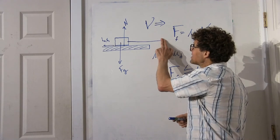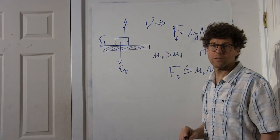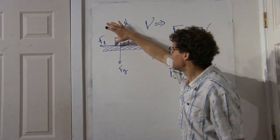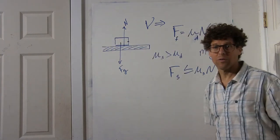What if I stopped pulling? What would happen to the box? Would it accelerate off in that direction? No, it would just sit there in equilibrium because the frictional force would go to zero.